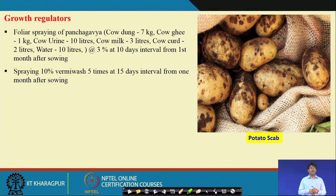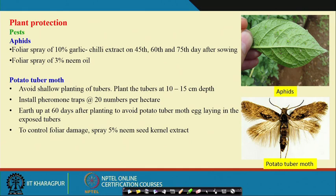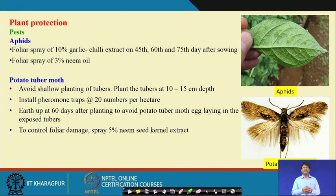For plant protection, aphids are a major problem in potato. Foliar spray of 10% garlic-chili extract — 100 ml per litre of water — sprayed at regular intervals is effective. Alternatively, 3% neem oil — 30 ml per litre of water — can be sprayed to control aphid attack in potato.